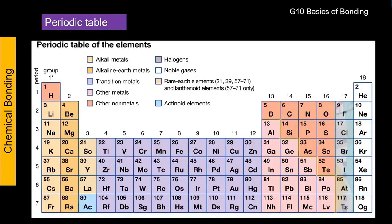Our periodic table is really a very clever combination of elements. Elements are pure substances that occur in nature, and they have been experimented with, their structure sorted out and put into an order of how they behave. It was by a Russian scientist, a chemist in the 1800s. So let's look at it.